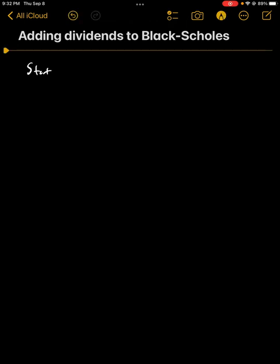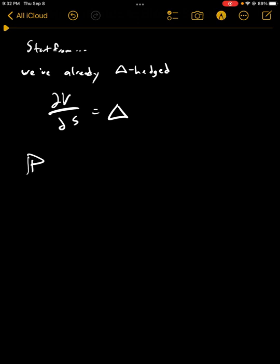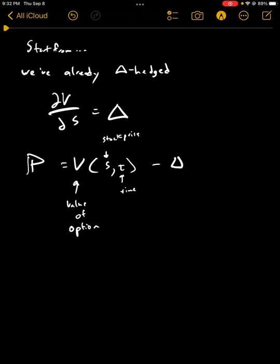Alright, so we're going to start from the point where we've already delta hedged. The value of our portfolio is equal to V of S and t, the value of the option with respect to s, which is the stock price, and t, which is time, minus delta times s.